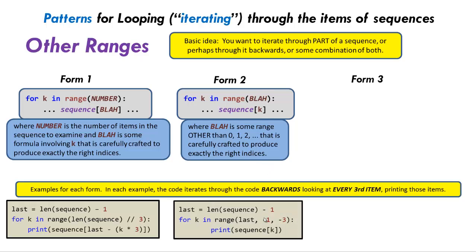Here's our example. Again, last is the length of the sequence minus 1. So we start at length of sequence minus 1 — if we have 10 items, we start at index 9, because that's the index of the last one. We go down by 3 each time and stop when we get past the 0th one, when we get to minus 1.